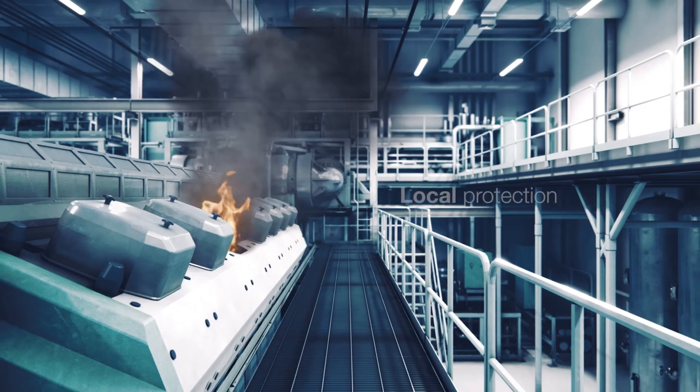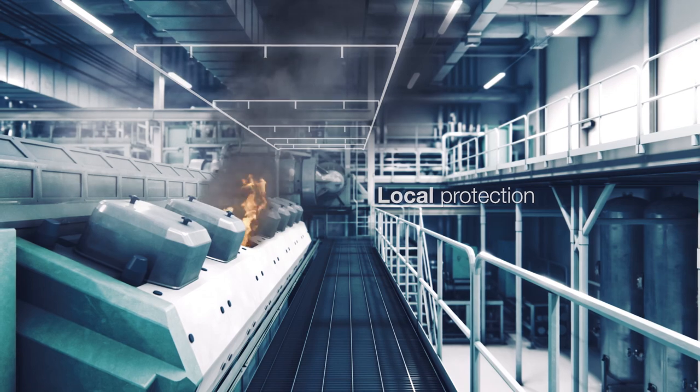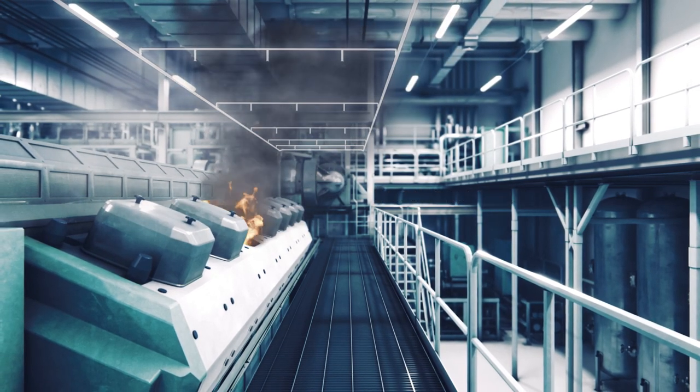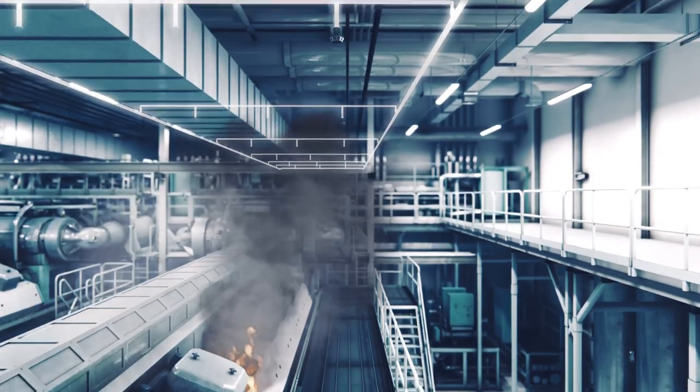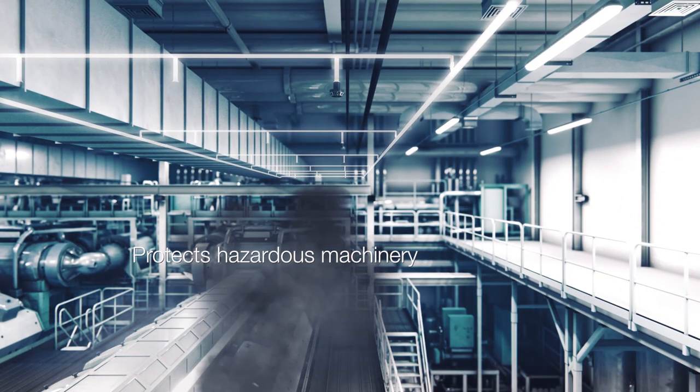The local protection system is designed to protect most hazardous machinery on board, such as engines, purifiers and boilers. High Fog spray heads are divided into sections in a way that each protected object has its own section valve.